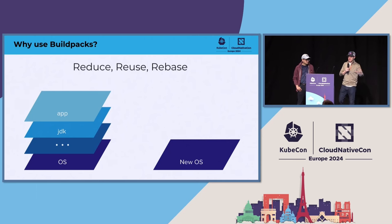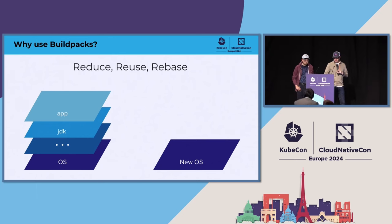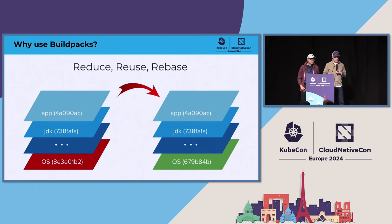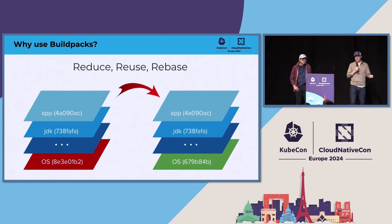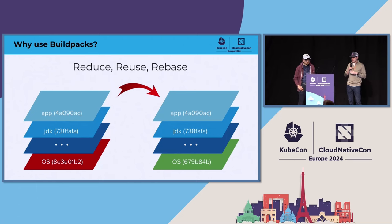This process takes the top layers of a container image and rebases them onto a new operating system without ever running a build. This is by virtue of the ABI compatibility offered by operating system vendors like Canonical and Red Hat. So when you get a vulnerability in the base image, you can take your Java layers — your JDK, your application, your dependencies — and essentially lift and shift them onto the new operating system.